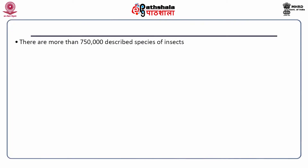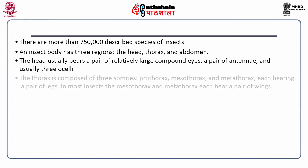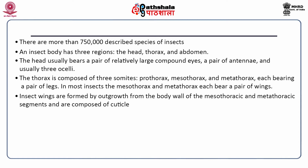There are more than 750,000 described species of insects. An insect body has three regions: the head, thorax and abdomen. The head usually bears a pair of relatively large compound eyes, a pair of antennae and usually three ocelli. The thorax is composed of three somites — prothorax, mesothorax and metathorax — each bearing a pair of legs. Insect wings are formed by outgrowth from the body wall of the mesothoracic and metathoracic segments and are composed of cuticle.